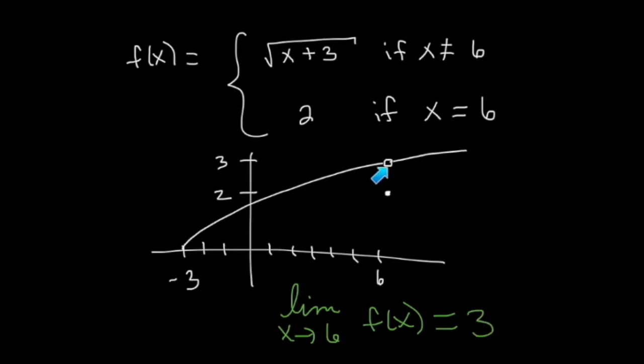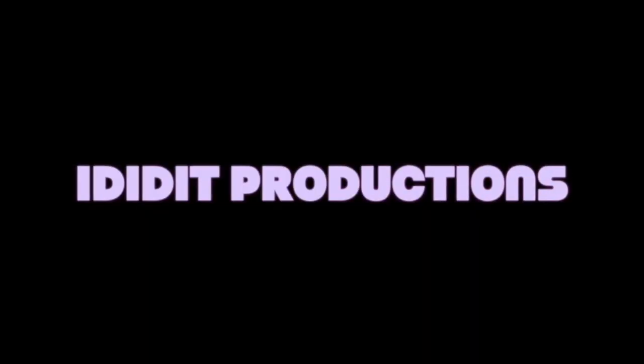Even though this one has a hole and the previous example didn't have a hole, their results still agree because limits are all about approaching. What is the height of the function approaching as x's approach 6? I don't actually care what happens at x equals 6. So there you go. There's a basic introduction to limits. And we'll see you in class. Thank you.